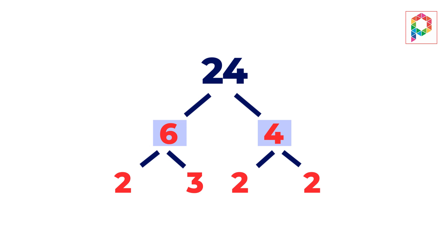6 becomes 2 times 3 and 4 becomes 2 times 2. And the building blocks of 24 are 2, 2, 2 and 3.